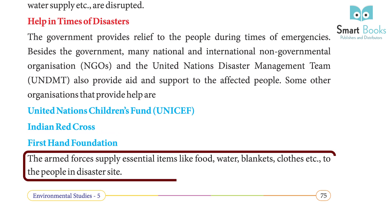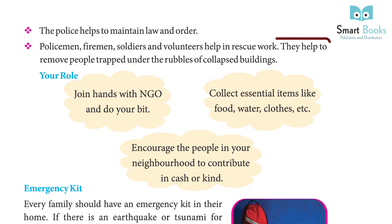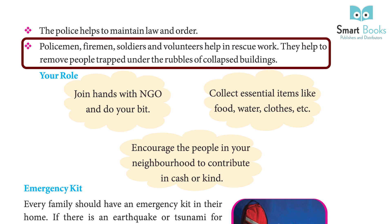The armed forces supply essential items like food, water, blankets, and clothes to people at the disaster site. The police help to maintain law and order. Policemen, firemen, soldiers and volunteers help in rescue work. They help to remove people trapped under the rubble of collapsed buildings.